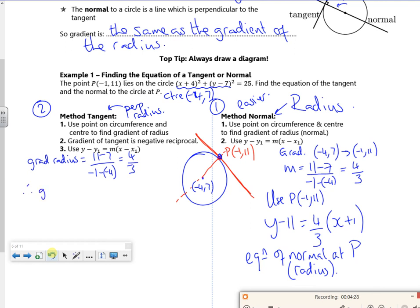So therefore, my gradient of my normal is -3/4. Once again, I'm going to use the point P.